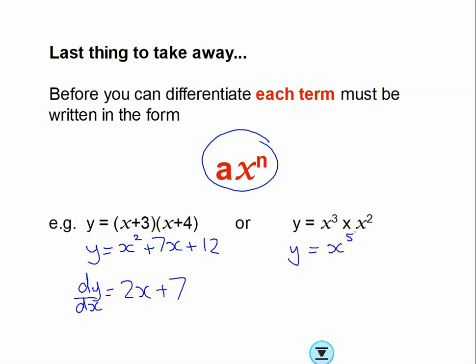So in here, dy by dx is 5x to the 4. This is in the form ax to the n. This is in the form ax to the n, just multiple terms of it. Okay, that's it guys. Best of luck.